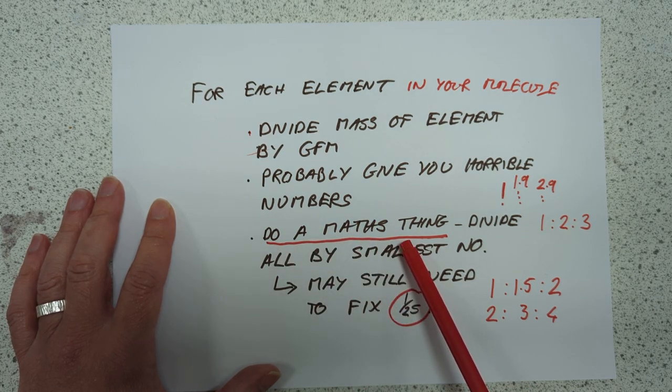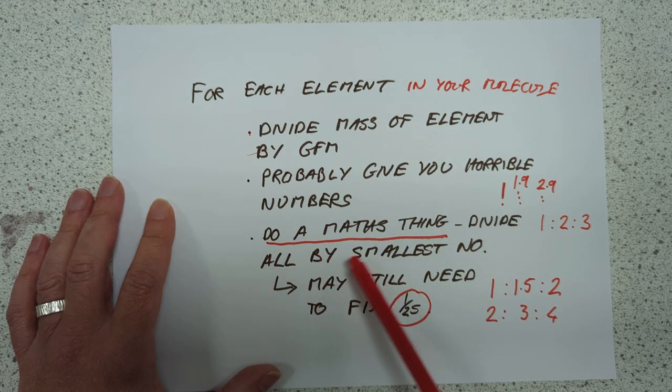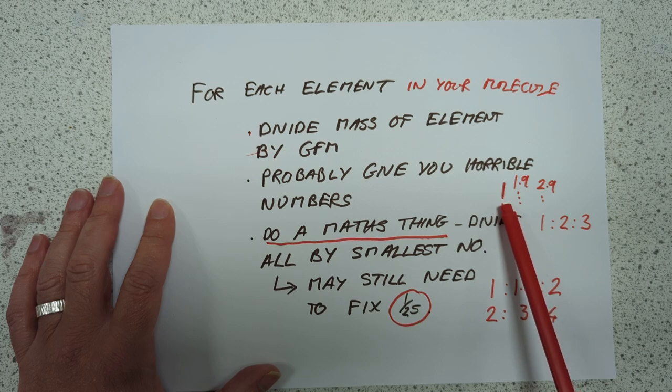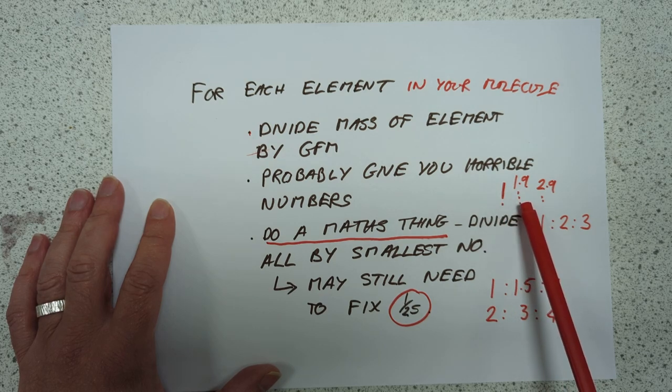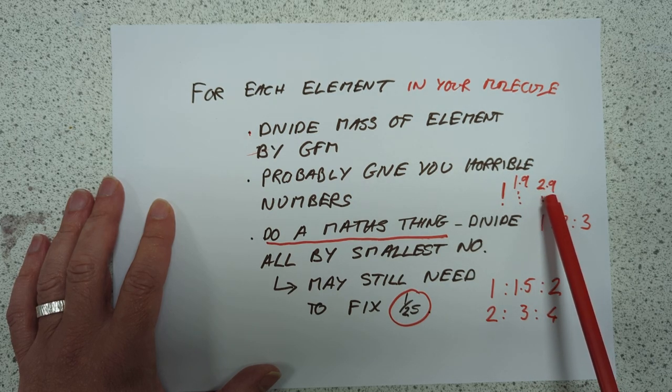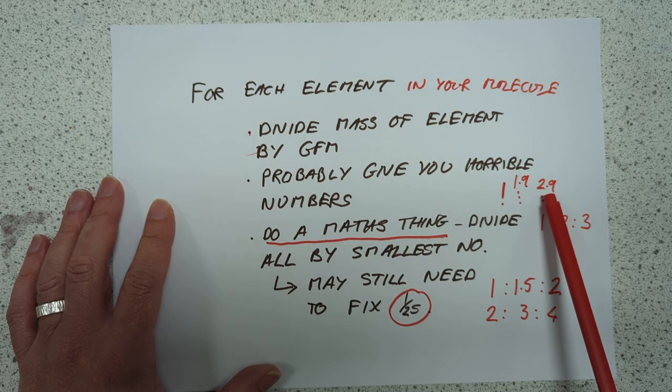How do we fix that particular problem? Well, we can do a maths thing. So if you have 3 horrible numbers, if you divide all of them by the smallest of these numbers, you can guarantee in making one of your numbers come to 1. The others are probably going to be something like, say, 1.9, say 3.1. It's okay to round if you're just above or just below the number, so this would be taken as 1 to 2 to 3.